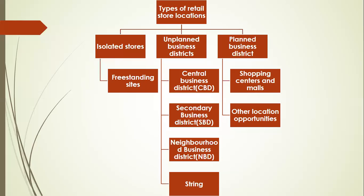Here the land is a little costlier than the other types. Then neighborhood business district is very much near to everybody's home where you will be able to buy the products whenever you require. Strings are completely unplanned — any place they will sell the products, so every day you can see them in a different place. That is unplanned business district.